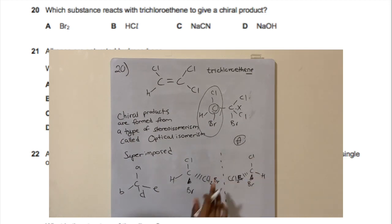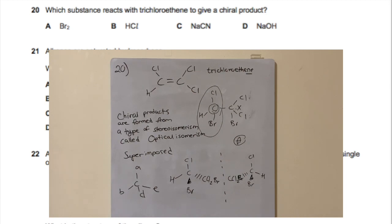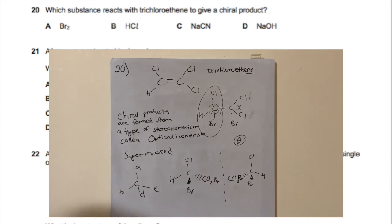HCl, NaCN, and NaOH all fail to produce a chiral product when reacted with trichloroethene. Only bromine gives the required optical isomer. So A is the answer. That's it for this video — hope you enjoyed it and I'll see you next time.